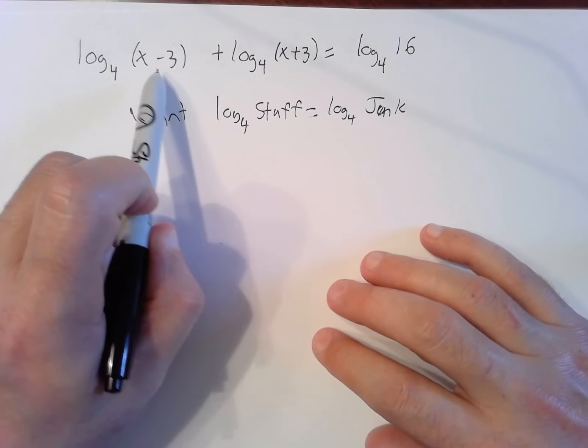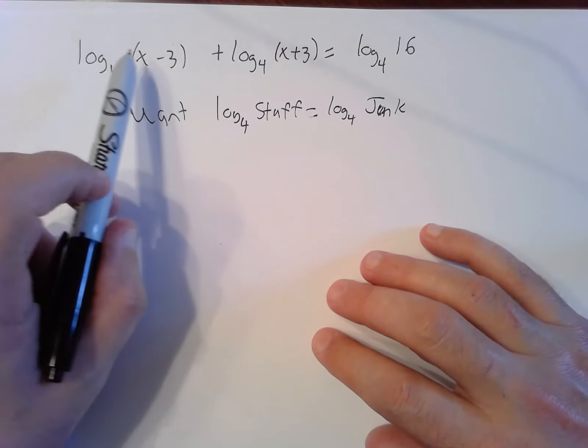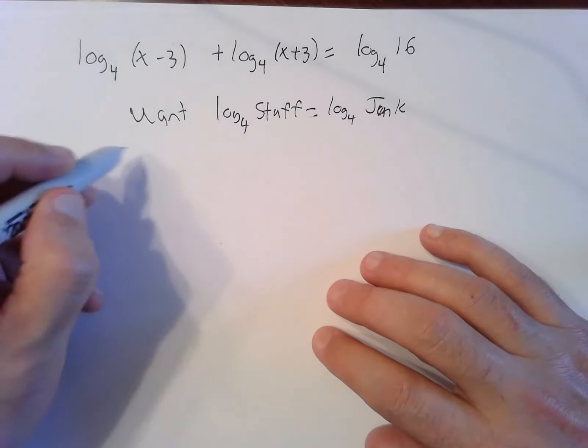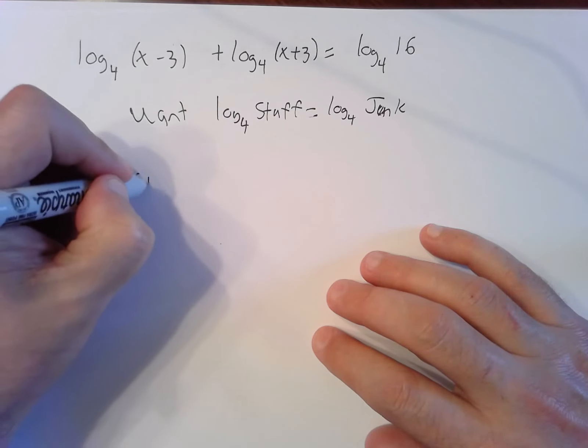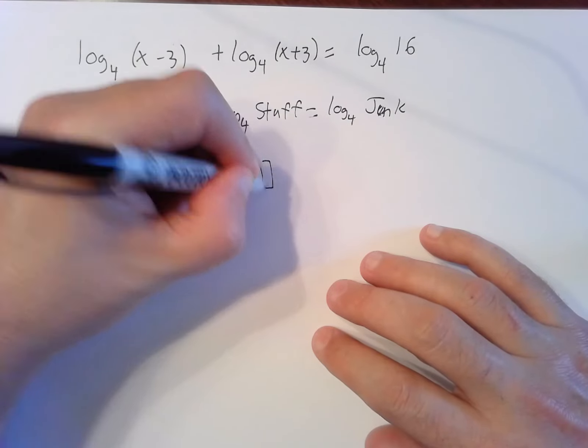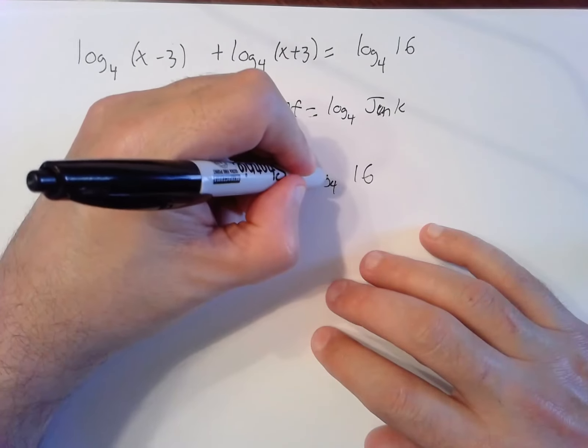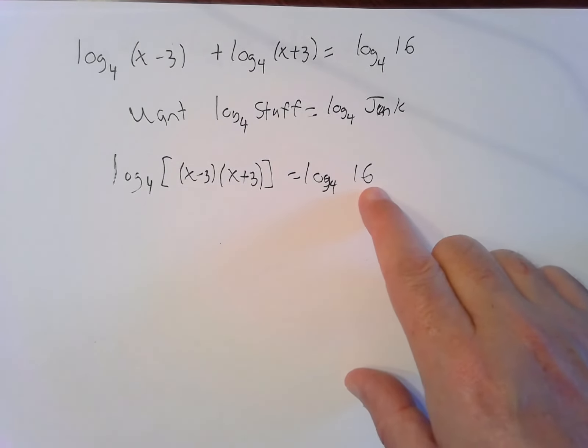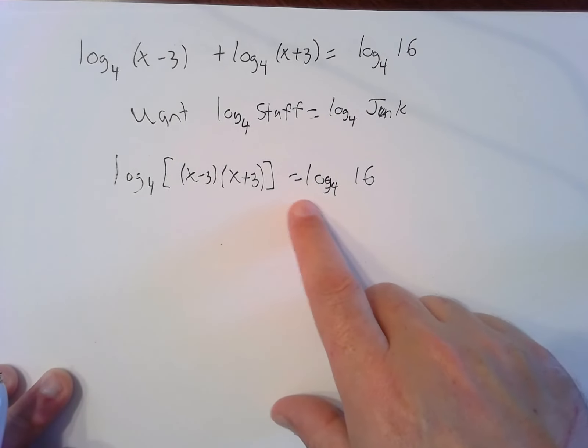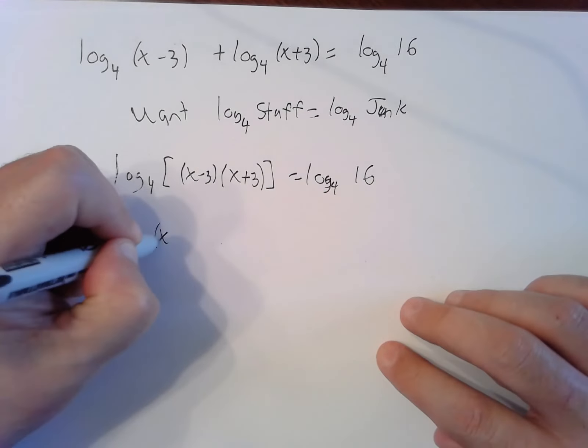I need a single log on one side equals a single log on the other side, so I have to use the rules of logs to combine logs together. We call that collapsing logs. Added outside will become multiplied inside, and we'll get log base four of x minus three times x plus three equals log base four of 16. Now we've got what we want, we've got log of stuff equals log of stuff.